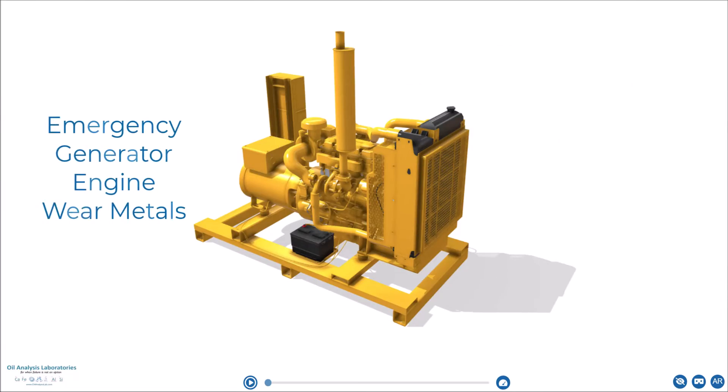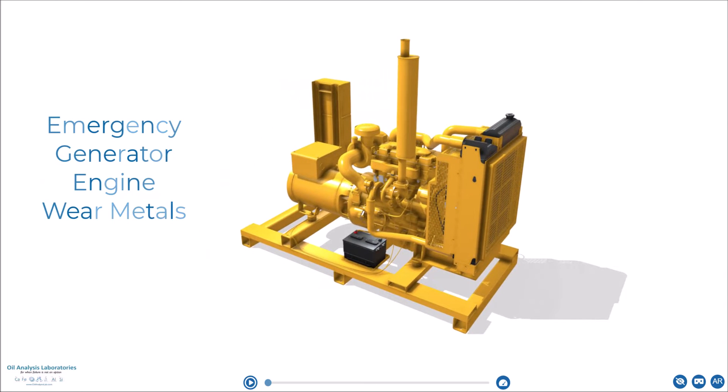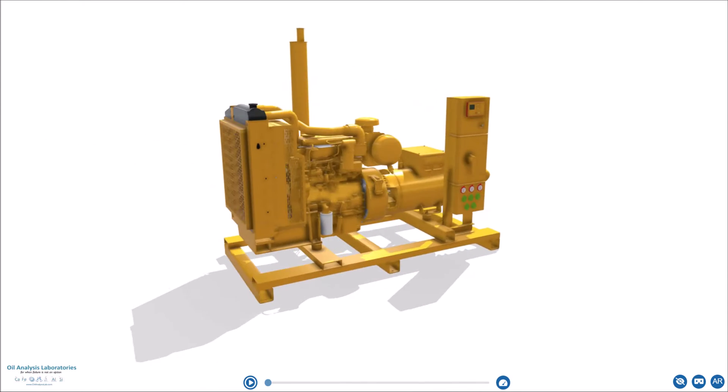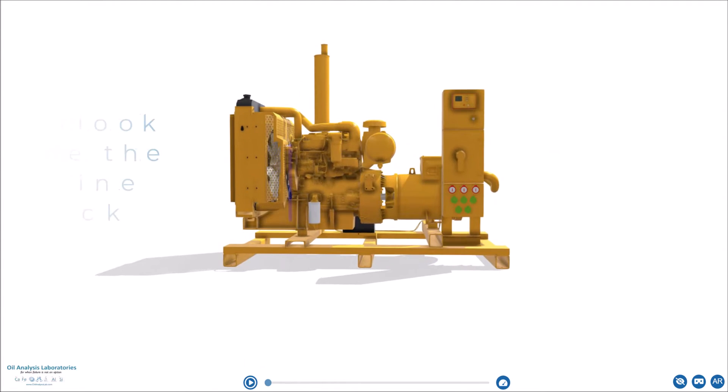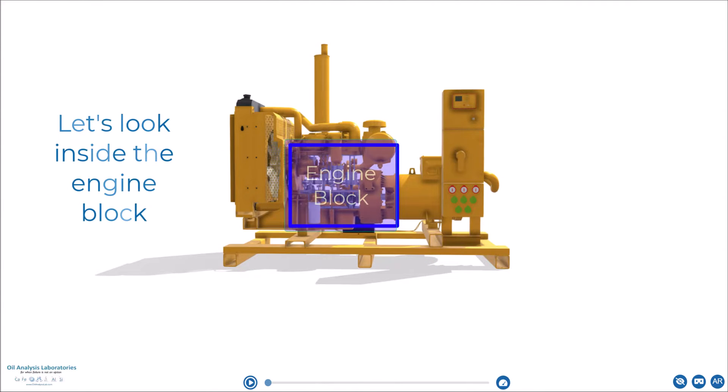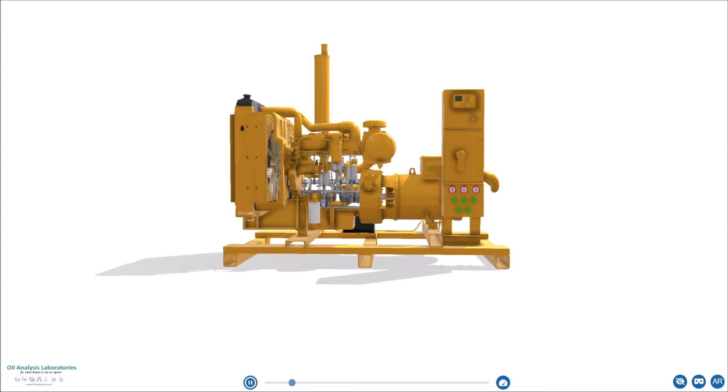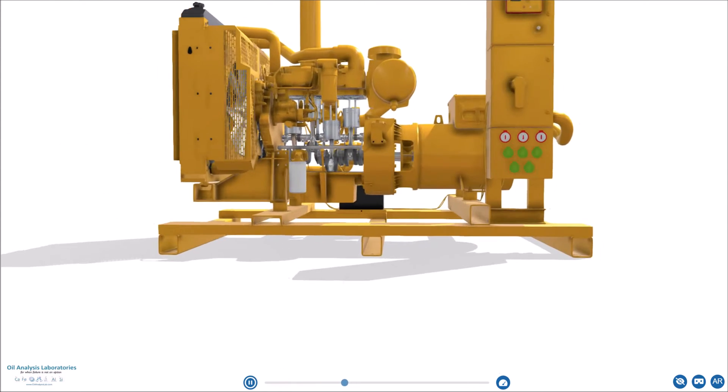So we have here a model of an emergency gen set. Unfortunately, it's a bit boring from the outside. So let's first remove the engine block so we can have a good look inside the engine. A little zooming here and apologies for the erratic camera movement. I screen recorded this on my iPad so it might be a little jumpy in places.